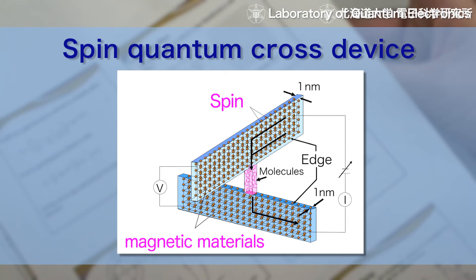Because quantum cross devices enable nanoscale contact, their spin versions enable nanoscale spin injection.